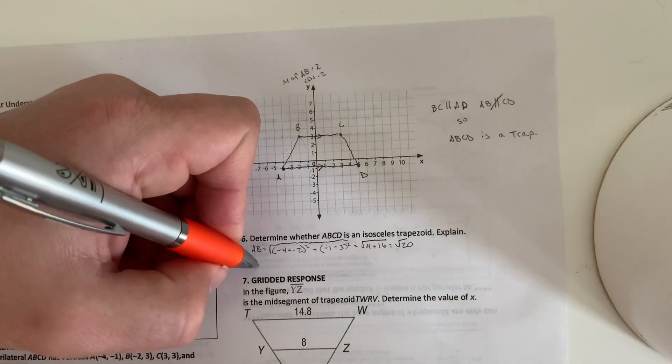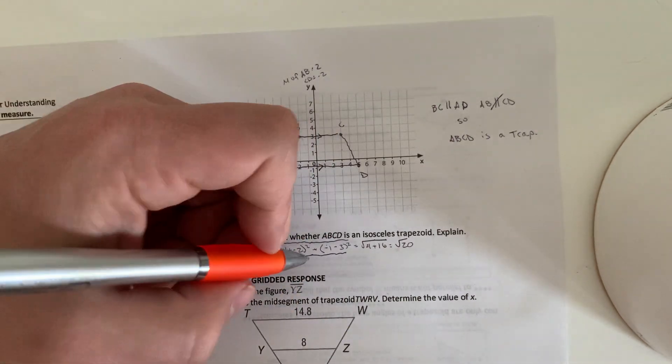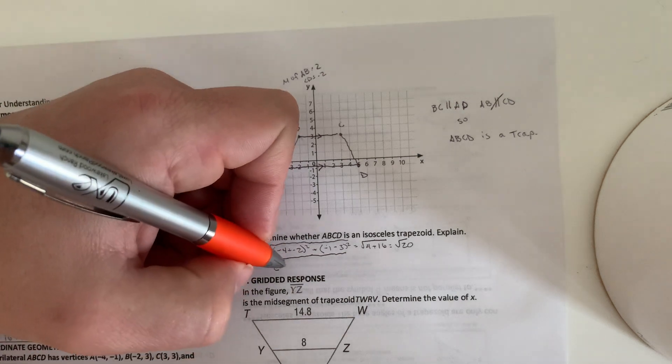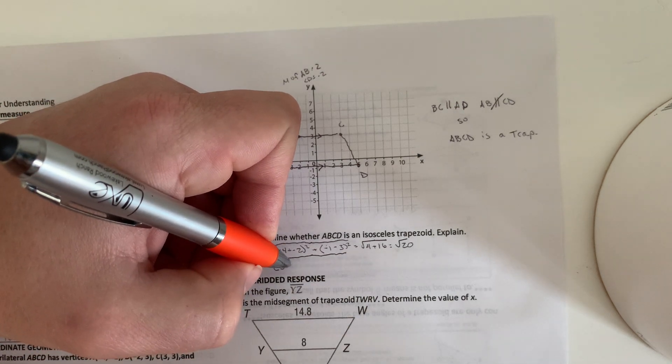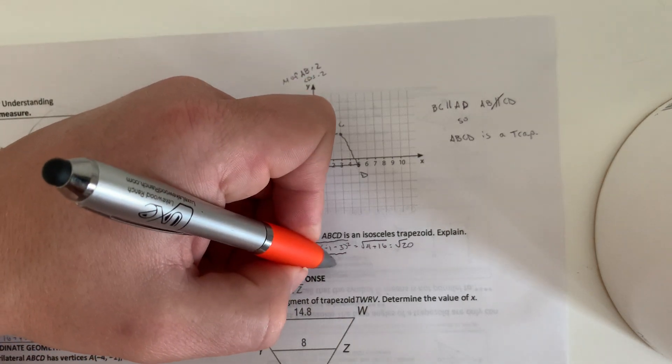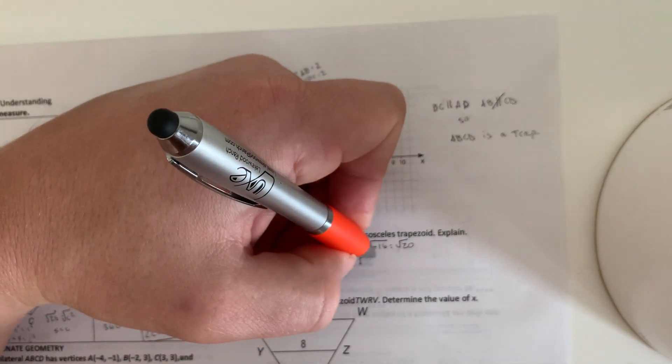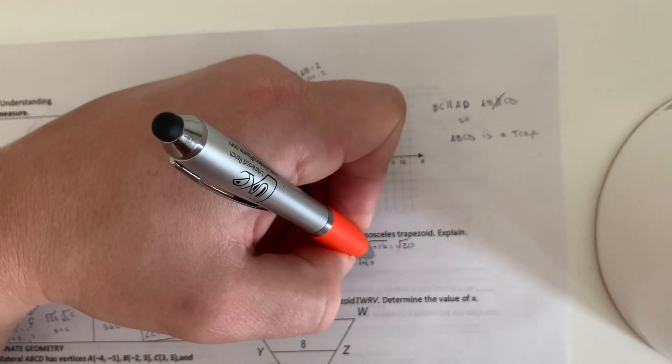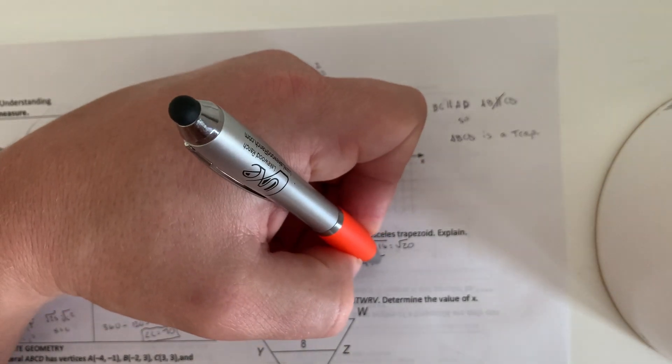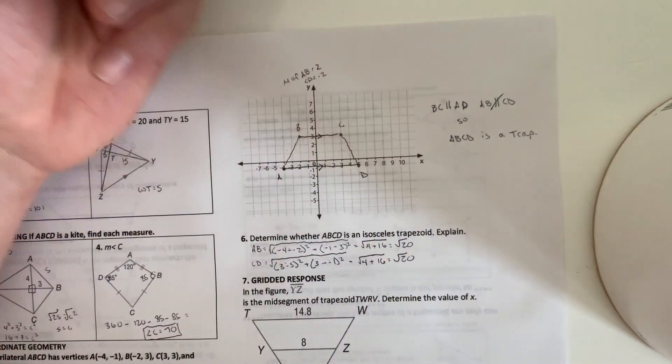We just leave it like that because now we're going to do CD. We need CD to be the square root of 20. If it's not, then this is not necessarily a trapezoid. So 3 minus 5 squared plus 3 minus negative 1 squared. We're going to have negative 2 squared, which is just 4. Plus 3 minus a negative 1, which is 3 plus 1. So 4 squared is 16. It gives us the square root of 20.